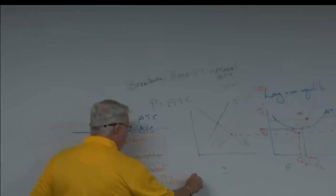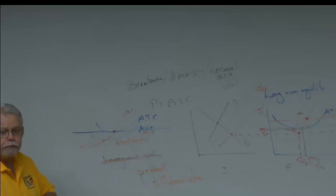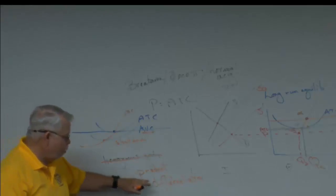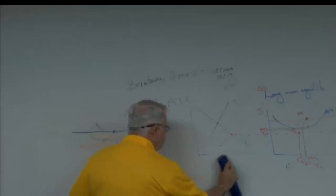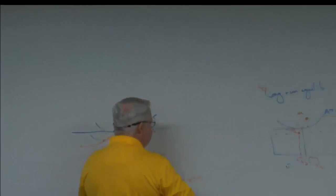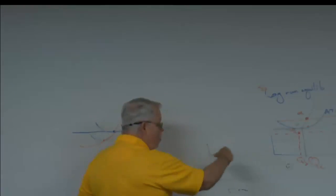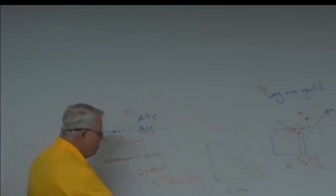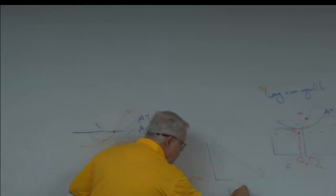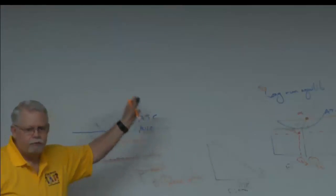A six-syllable word — powerful at a cocktail party! If you have product differentiation, that's what causes the demand curve for the firm to no longer be flat — it has a negative slope. So the marginal revenue curve, as I showed you at the very beginning, is over here to the left. Once you change that assumption, everything else is the same analysis.